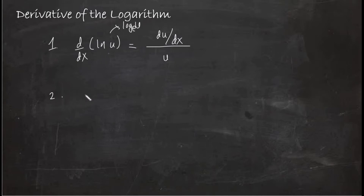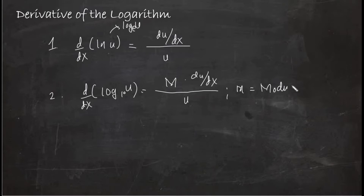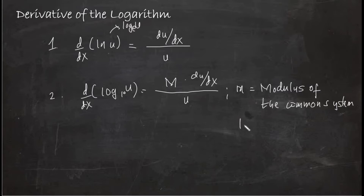Second, we have the derivative of the logarithm of u base 10. This is very similar — it is m times the derivative of u with respect to x, all over u. Here, m is called the modulus of the common system, which equals log base 10 of e.